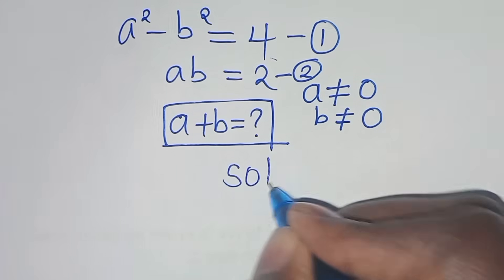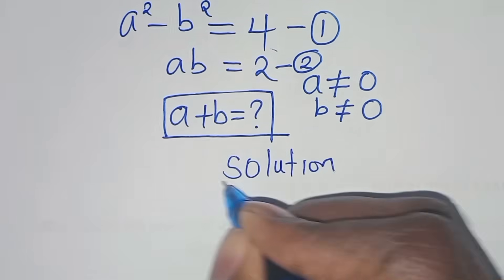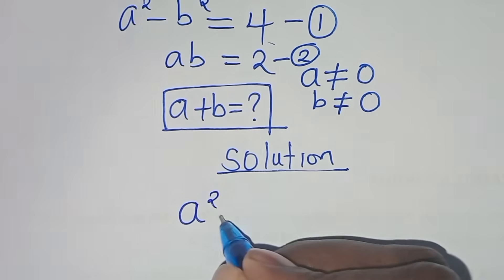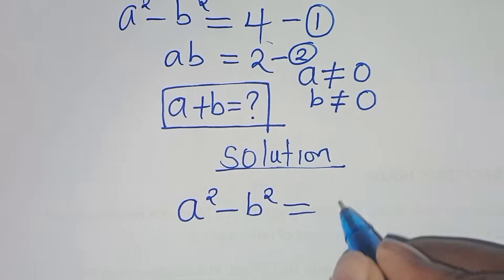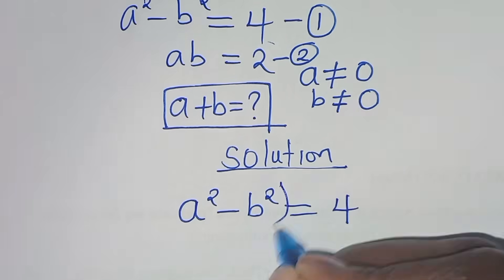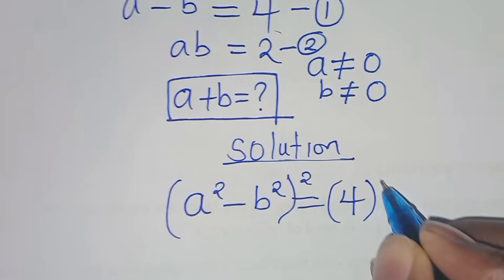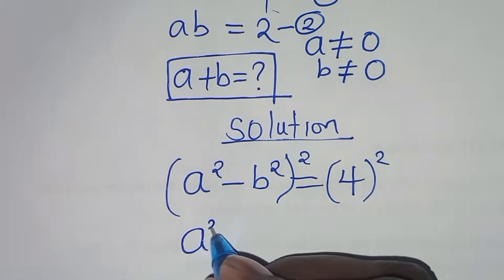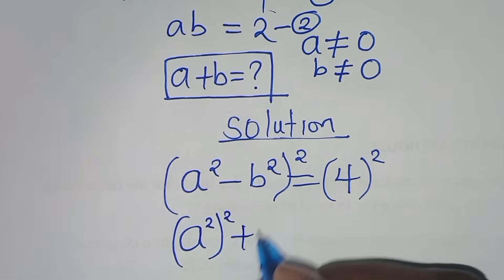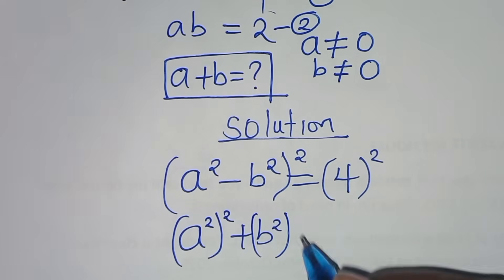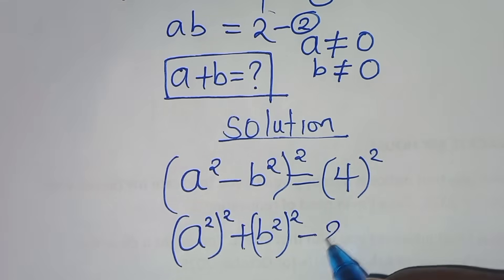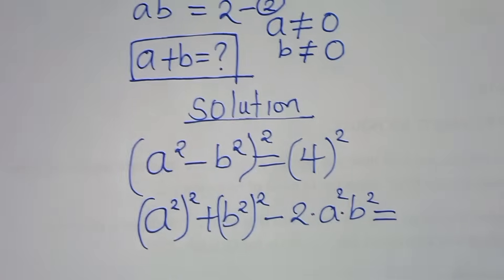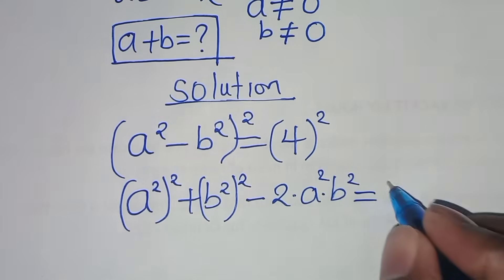So let's present the solution from here. From equation 1, which is a squared minus b squared equals 4, the first step is to square both sides, so that we have a squared raised to the power of 2, plus b squared raised to the power of 2, minus 2 times a squared times b squared, equals 4 squared, which is 16.